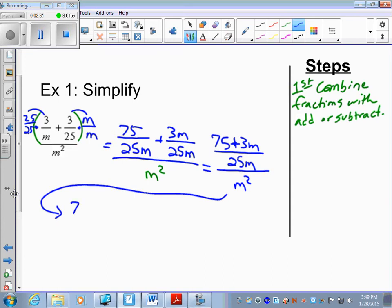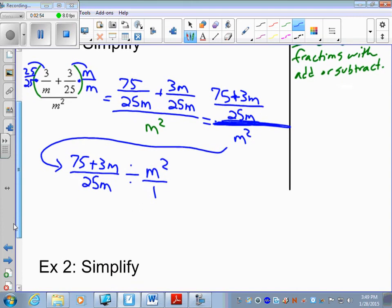You take 75 plus 3m over 25m. And this division right here, we're going to write a division of m squared. And we want to make that fraction, so you divide it by 1. Now this is exactly like 6d part 2, where you have to keep change flip.